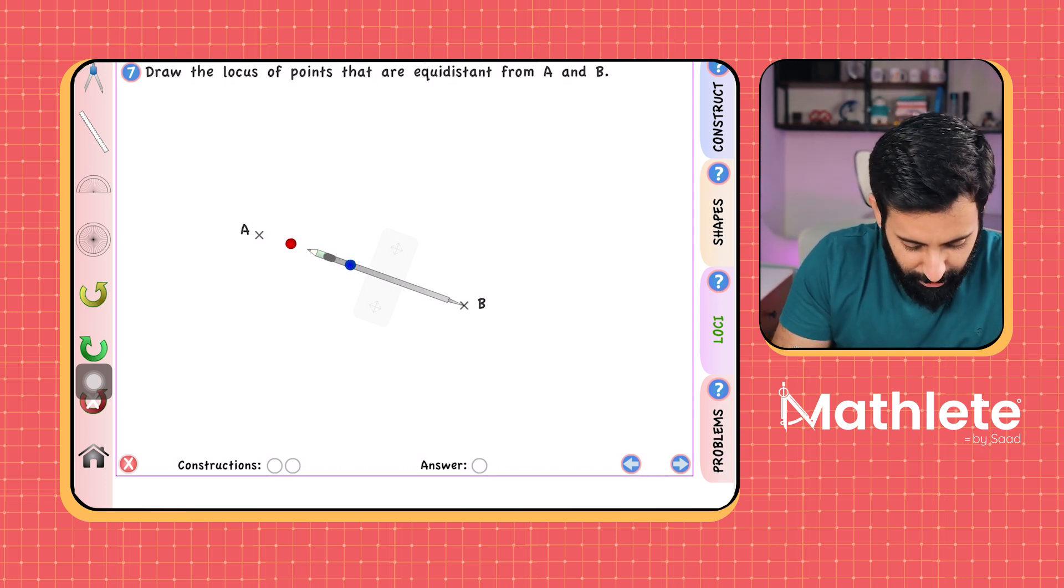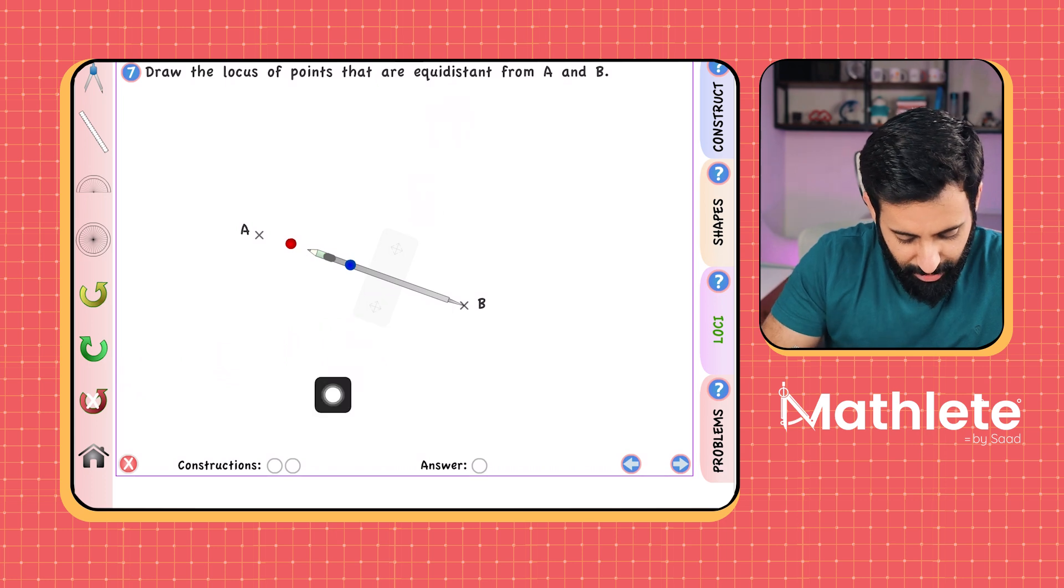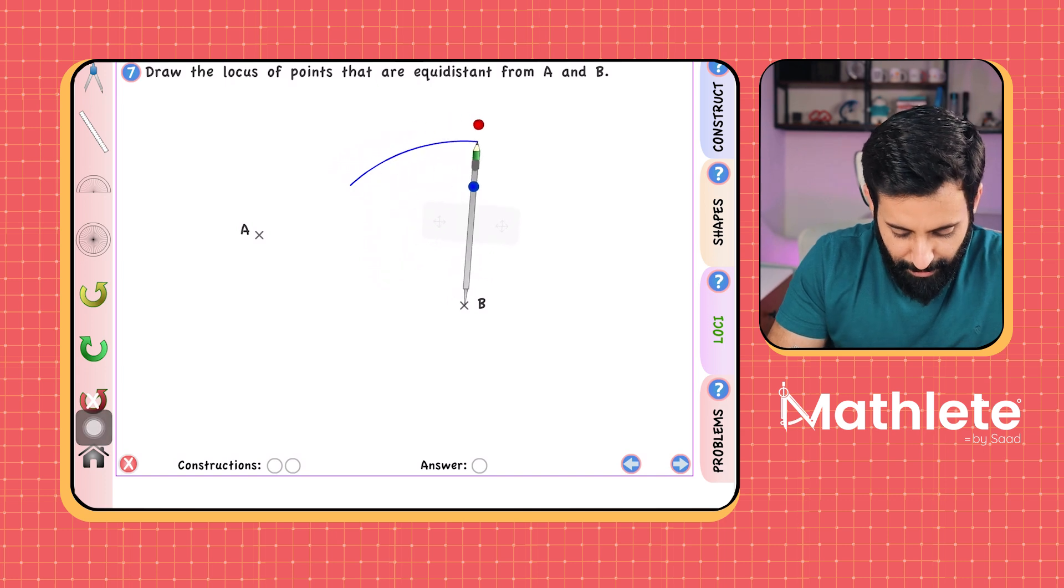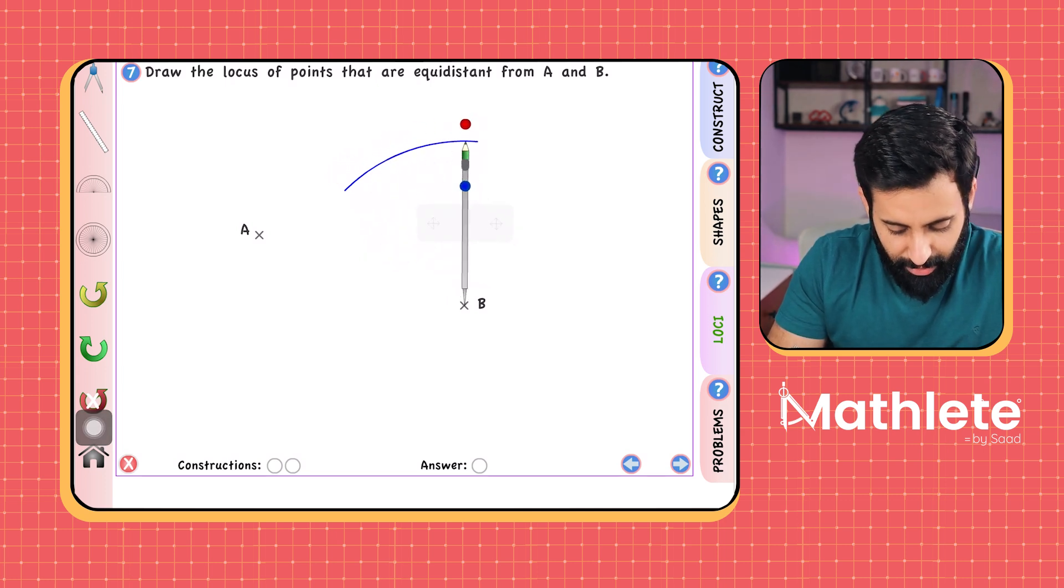Okay, now what you want to do is, we imagine the perpendicular bisector to be aligned somewhere over here. So what you want to do next is you want to draw arcs. And draw arcs open heartedly.